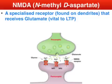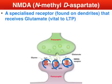NMDA plays a vital role in conjunction with glutamate in learning and enabling long-term potentiation (LTP). It's found on the dendrites of the post-synaptic neuron, which enables glutamate to bind with it and establish memory and learning.